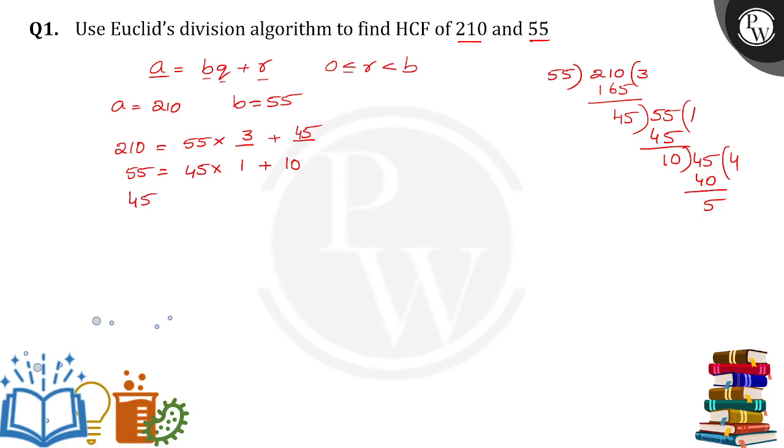So we can write this as 45 equals 10 into 4 plus reminder is 5, okay?